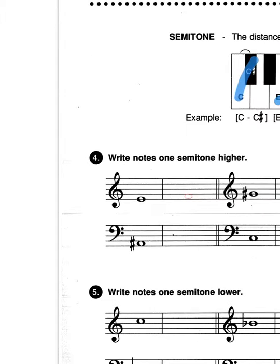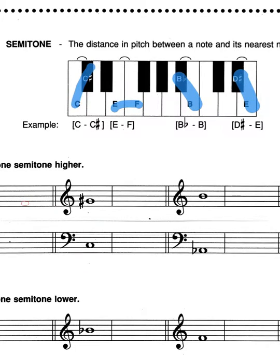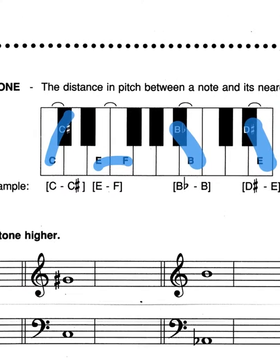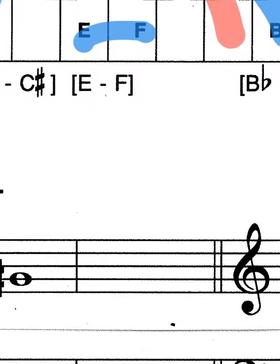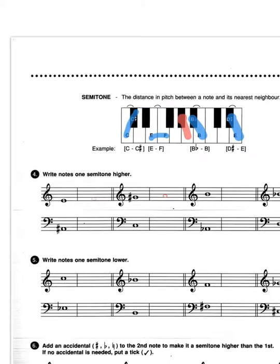So you can take your pen and draw a nice F over there. And then here we've got a G sharp. Let's have a look at our keyboard. G sharp is here, so one semitone higher would be A. So let's go ahead and draw that A on. Right, so you can carry on with that.